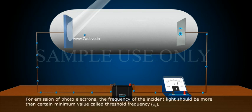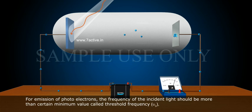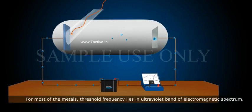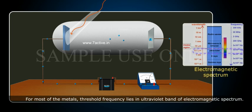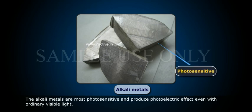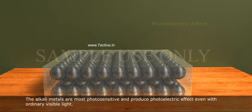For emission of photoelectrons, the frequency of the incident light should be more than a certain minimum value, called threshold frequency, whose value depends on the type of metal. For most metals, threshold frequency lies in the ultraviolet band of the electromagnetic spectrum. The alkali metals are most photosensitive and produce the photoelectric effect even with ordinary visible light.